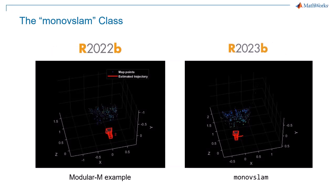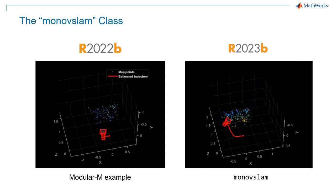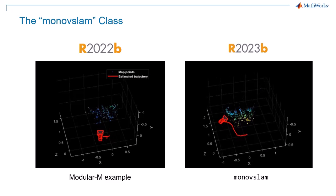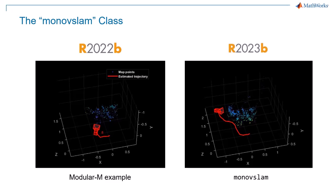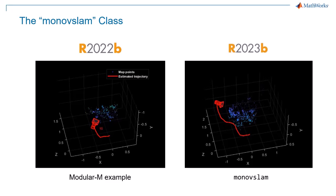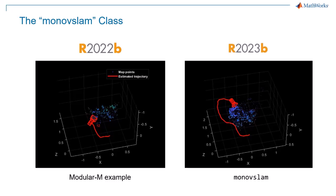This class substantially increased execution speed, enabling real-time Visual SLAM workflows to become a reality. Observe the difference in the processing rate between the previous and current implementations, as the camera moves along its trajectory.